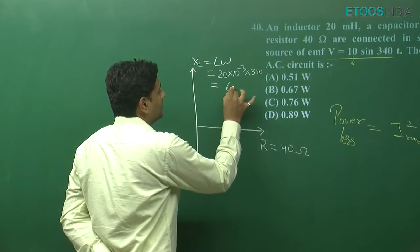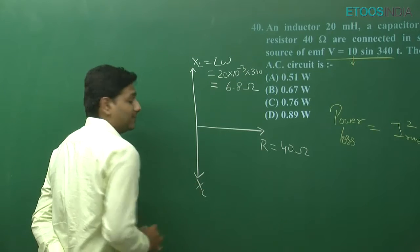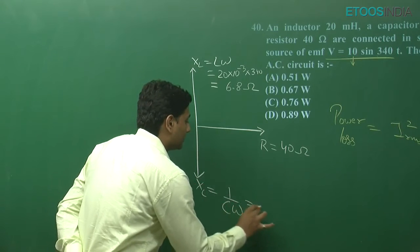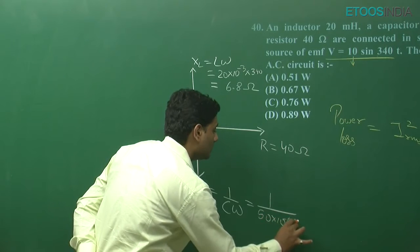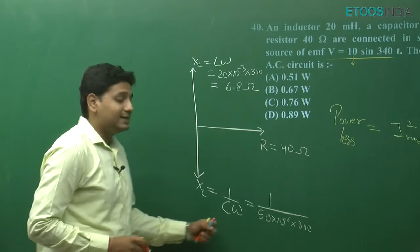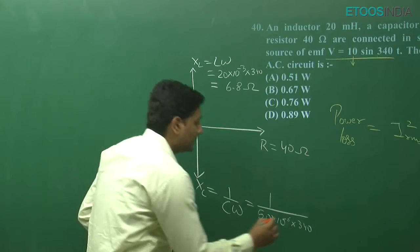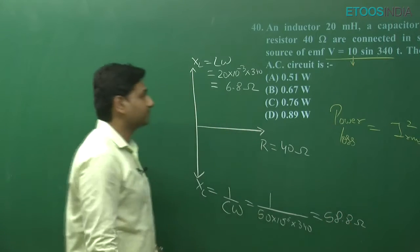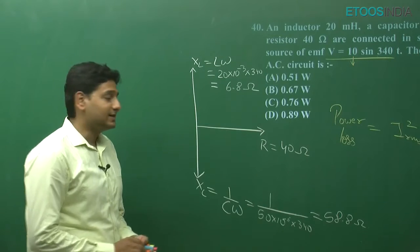Let's see the phasor diagram for this particular question. We need to find the value. So 50 is given, into 340 — 340 is the omega — and the capacitance given is 50 microfarad. We write it in that form and if you calculate this, it will come as 58.8 ohm.